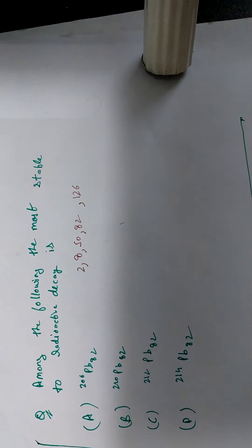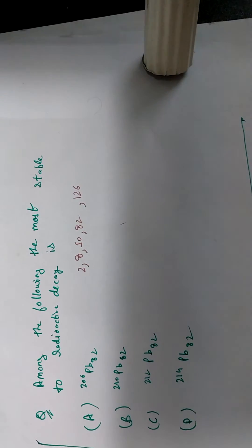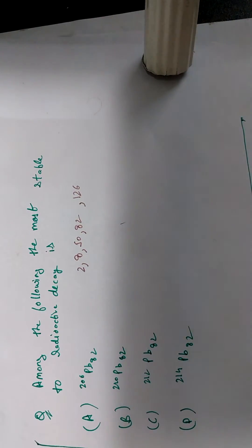So these are the magic numbers. So if the number of protons and neutrons in an element is equal to one of these numbers, then the element is very stable, right, to radioactive decay.